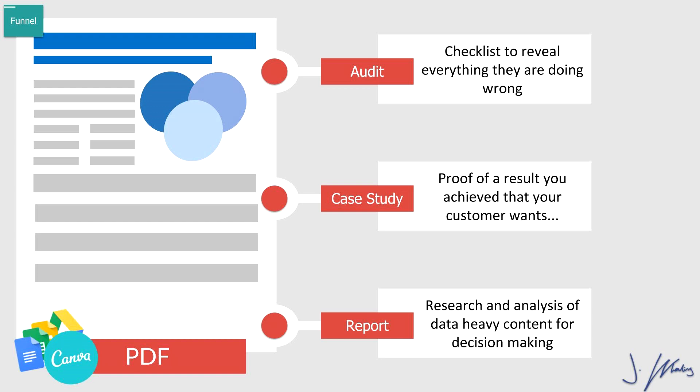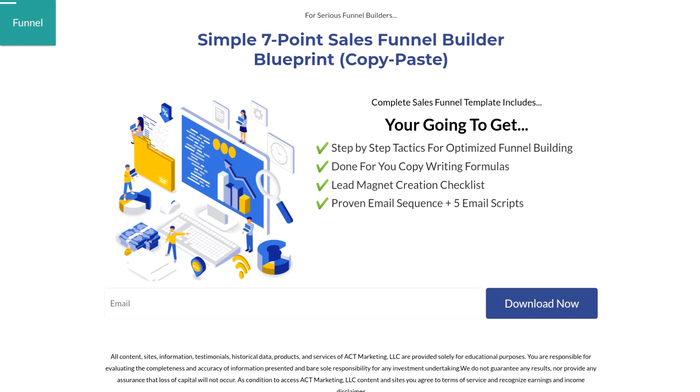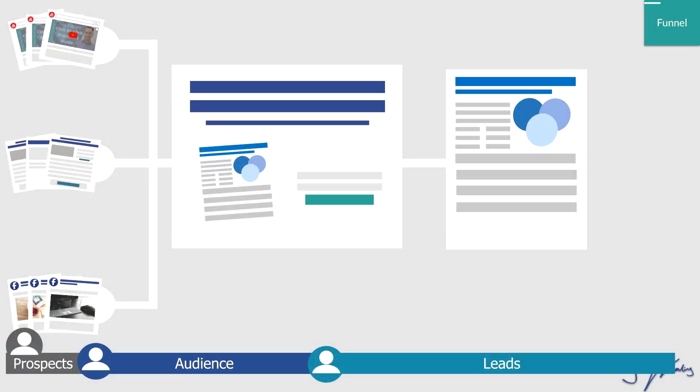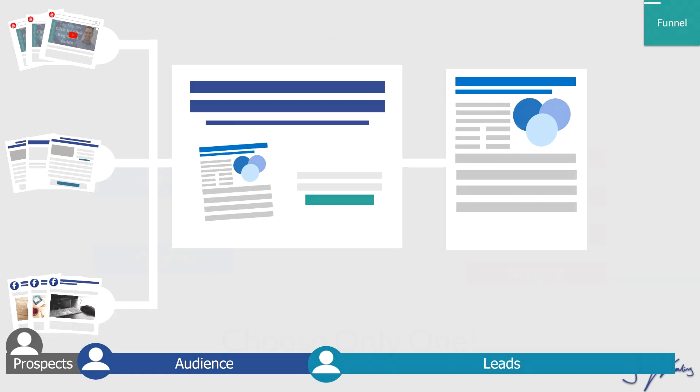The one specific type of lead magnet that works really well for lead generation is some sort of audit report or case study — these types of PDFs perform really well. Here's a quick example: a PDF audit where someone enters their name and email and goes through an audit of their Google Analytics account. You would either use an ad to show this audit, or link it in the description below your video to help people take the next step. If you want to learn more about how to put together the landing page and choose your lead magnet, check out the link in the description for a full tutorial on putting together this entire funnel.